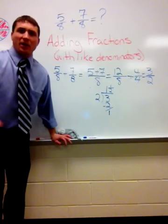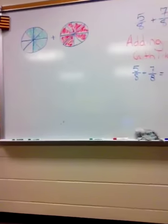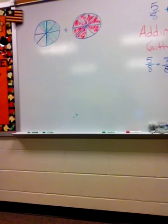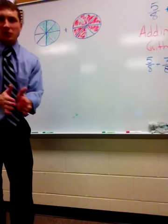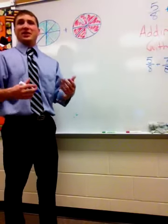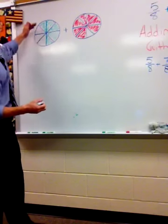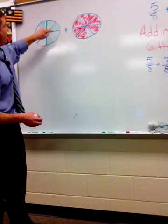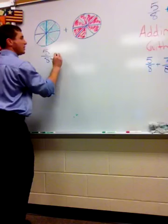Let's take a look at the actual picture model. Here you can see I drew two pictures of pizzas. Each pizza is divided into 8 equal slices. The first one has 1, 2, 3, 4, 5, or 5 out of 8: 5 eighths.